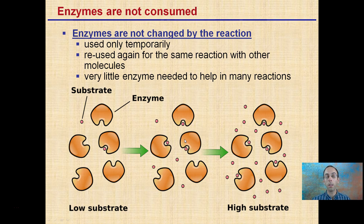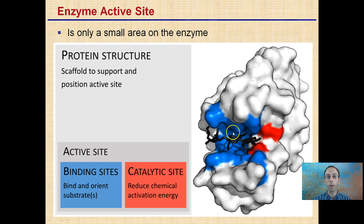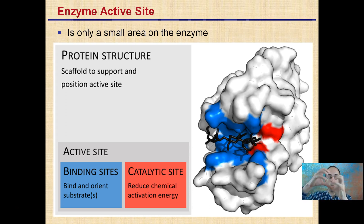The body doesn't need to continuously make more enzymes. The active site is a very small area of the enzyme — this giant molecule has a specific binding site, and the catalytic site reduces the chemical activation energy. This allows the enzyme to break things apart or synthesize them together, then return to perform that function again.